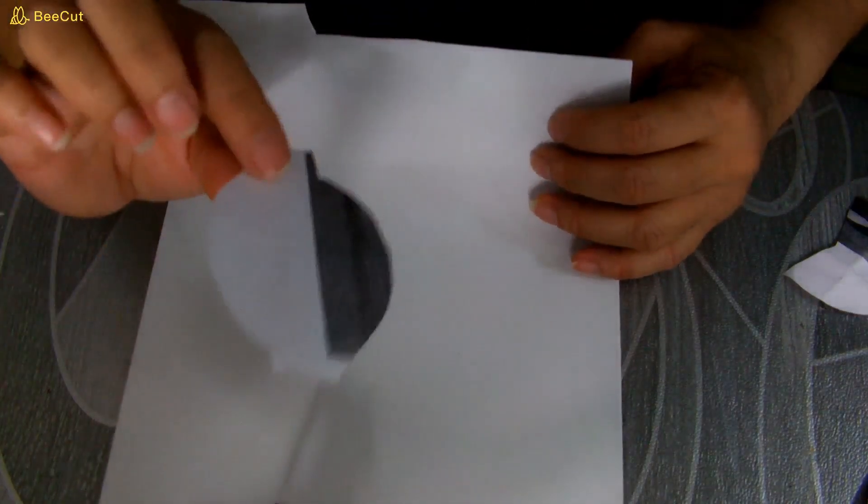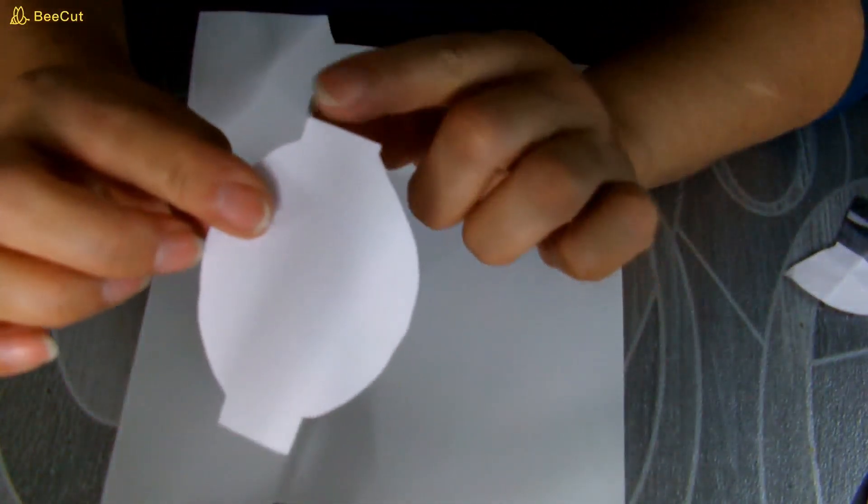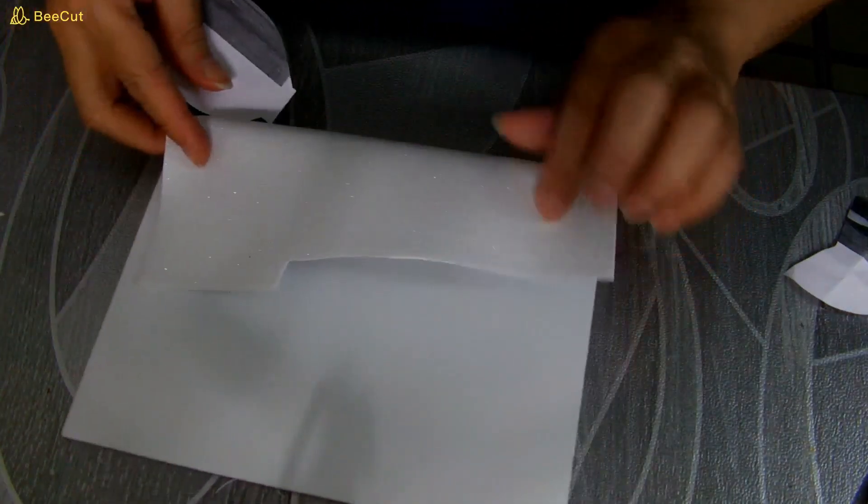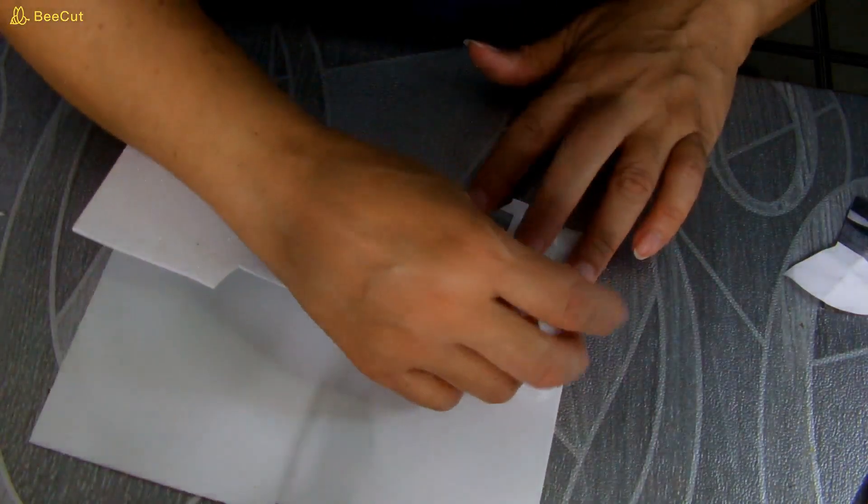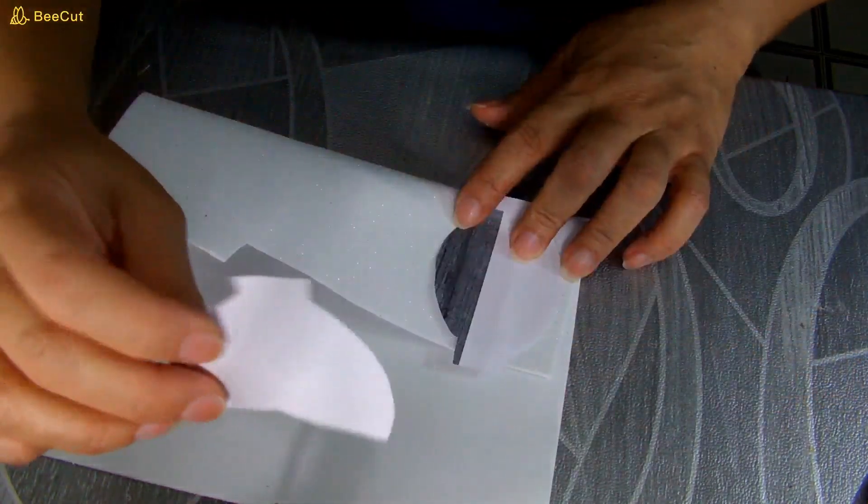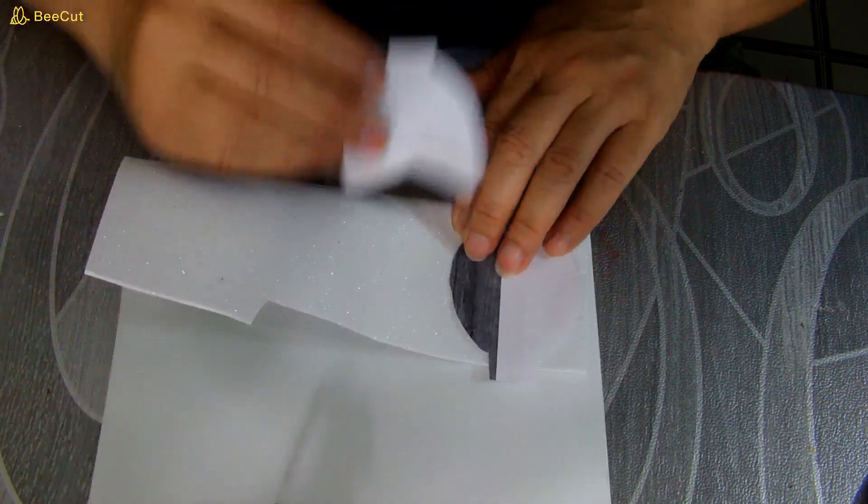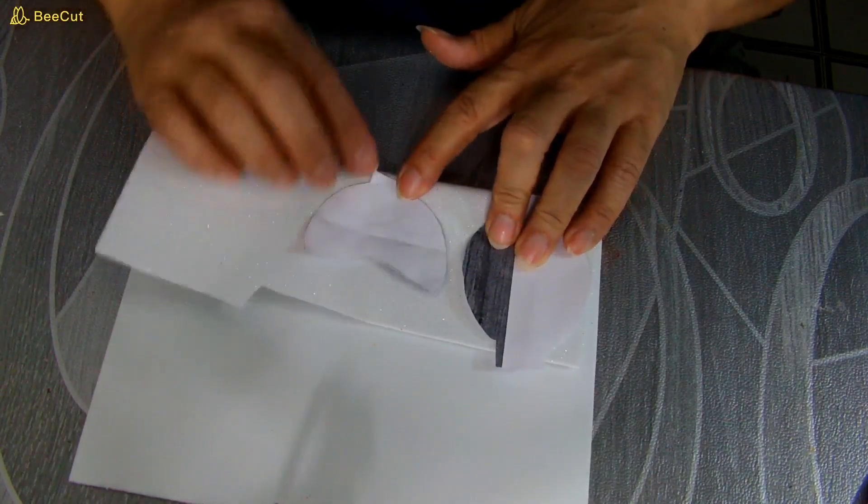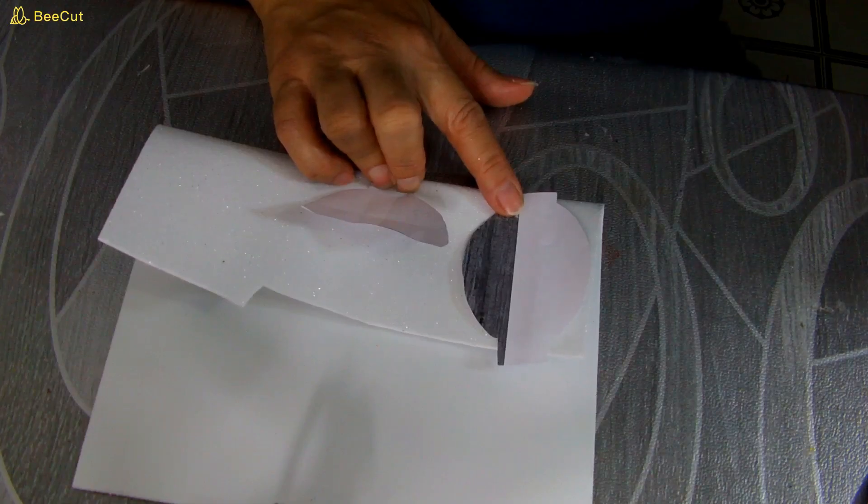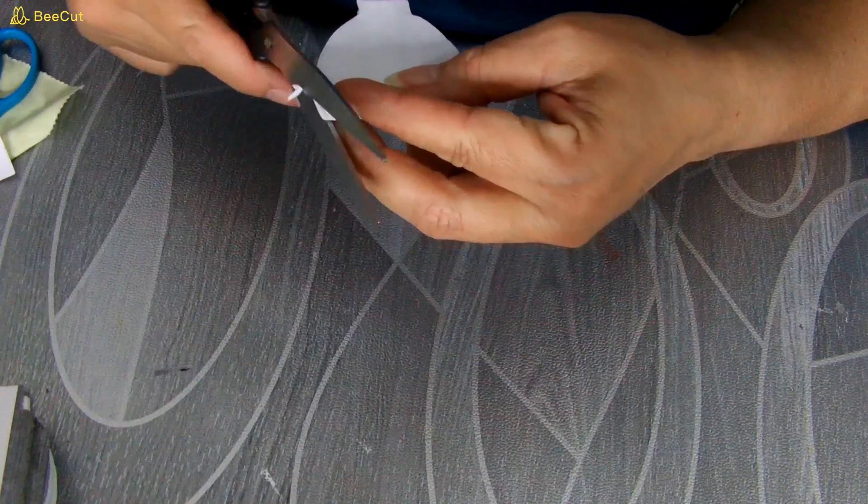Y después que lo tenemos así recortado, esta parte que es la partecita más cortita que hicimos la vamos a poner en el doblez. Vamos a doblar, la vamos a poner en el doblez y vamos a recortar. Igualmente esta, vamos a poner esta pestañita de lo que es el medio círculo y lo vamos a recortar así. Va a quedar unido, ya le muestro. Y aquí voy ya recortando.